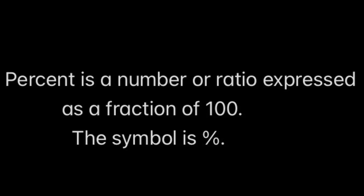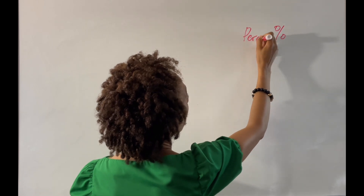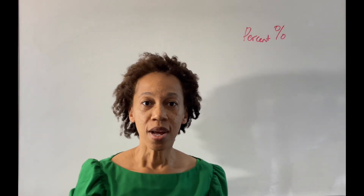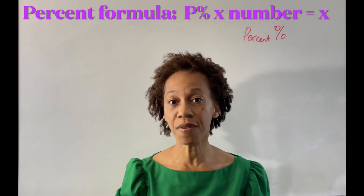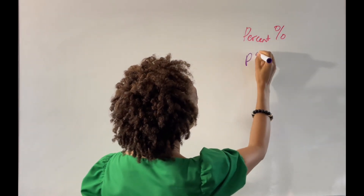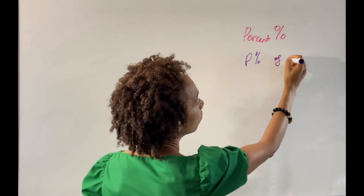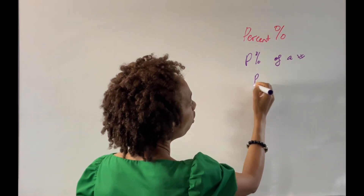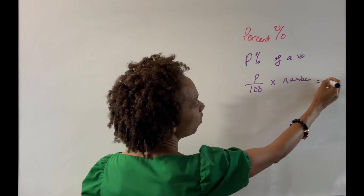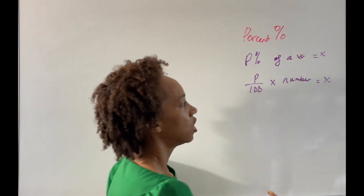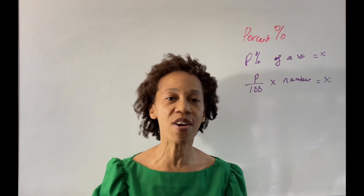What is percent? Percent is a number or a ratio expressed as a fraction of 100, and we usually use the percent sign. There is a formula we use when calculating the percent of something. If we are calculating the percent of a number, the formula is: P over 100, times that number, equals X — the result. This is the basic formula for calculating percent.